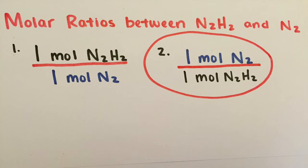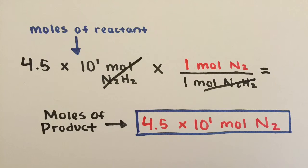However, we will be using the second one because the unit in the denominator must be moles of N2H2 since it must be cancelled out. Moles of N2 will be in the numerator. Now we do the math again and cancel out moles of N2H2, multiply 4.5 times 10 to the first power by 1 and divide by 1. Our new amount is 4.5 times 10 to the first power moles of N2.